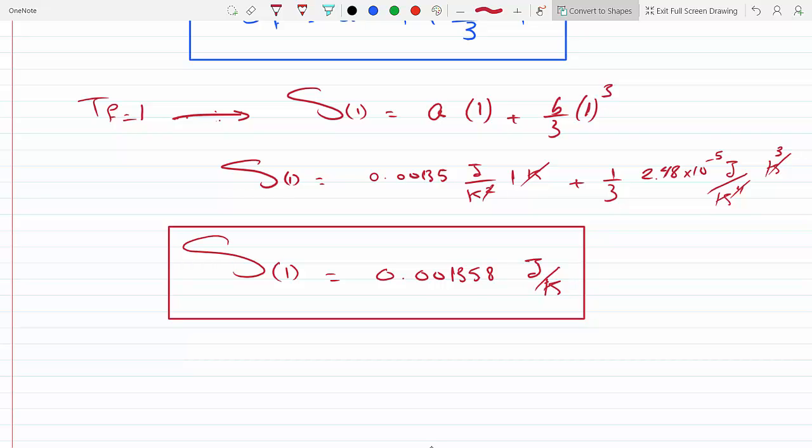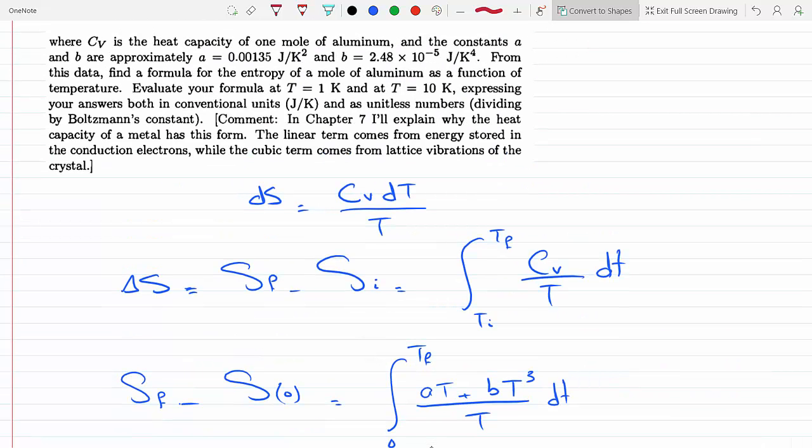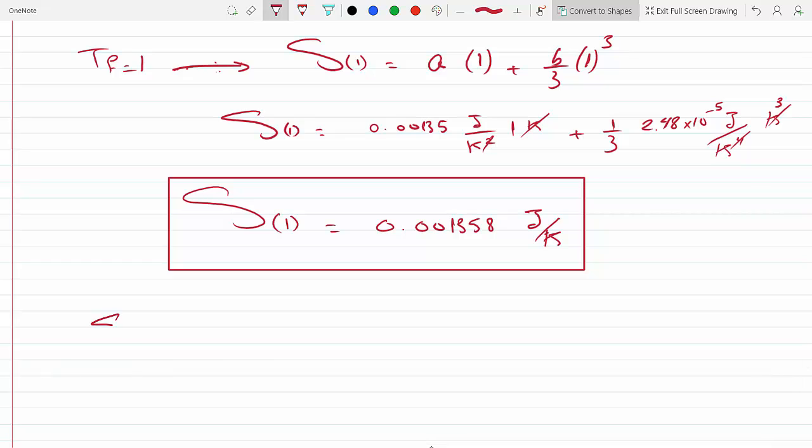The question says express your answer in joules per kelvin and in unitless numbers. I could just divide by Boltzmann's constant. If I need to turn this unitless, I would say this is S divided by k, so this would be 0.001358 joules per kelvin divided by k which is 1.381 times 10 to the minus 23 joules per kelvin.